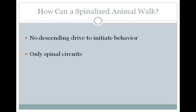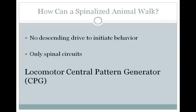You may be wondering how this spinalized animal can walk. It does not have any descending drive from those upper motor neurons to initiate behavior, but it turns out that the spinal circuits left have all the neurons necessary to start a rhythmic walking behavior. This group of cells is termed the locomotor central pattern generator, or CPG. You do need something to get this CPG started, and it turns out sensory input from the moving treadmill can get it started in some animals, like cats or rats.